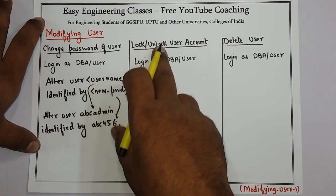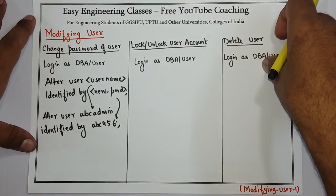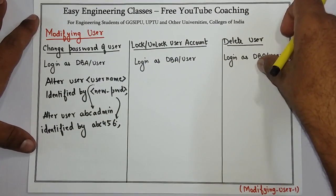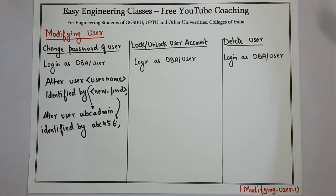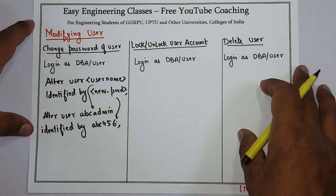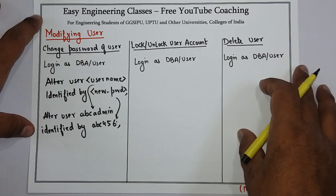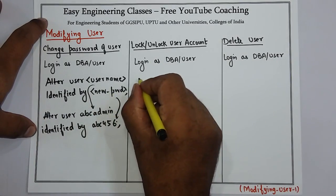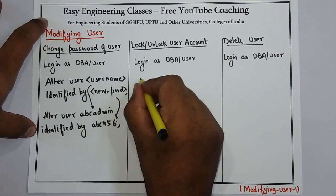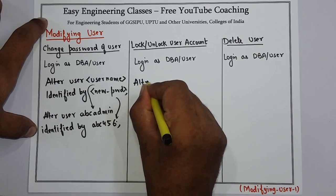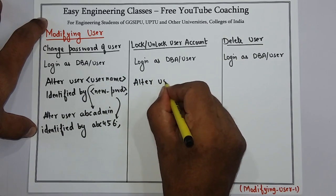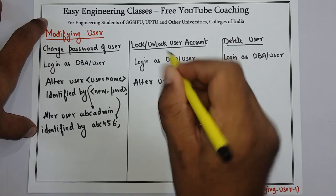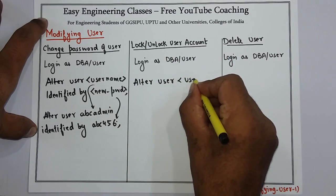Next is to lock or unlock a user account. There might be a situation where one of the users is performing some malicious task on the database. As a DBA, you can lock that user from accessing the database further. The command to do so is: ALTER USER username.